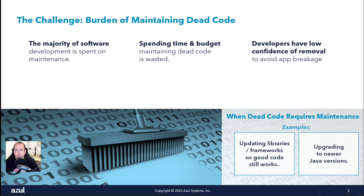Why aren't development organizations and developers going through to remove code? Well, it's because we can scroll past it relatively quickly when we go to work on our applications, and oftentimes we can tell when certain methods are used, but not all. So we really have low confidence in removing code because we don't want to worry about an application breakage.